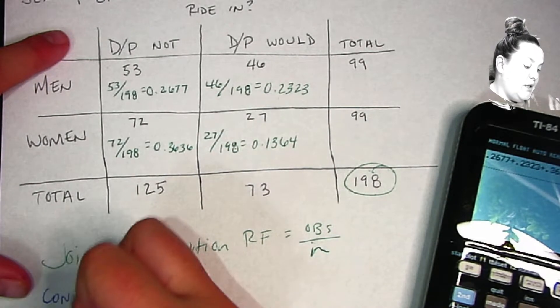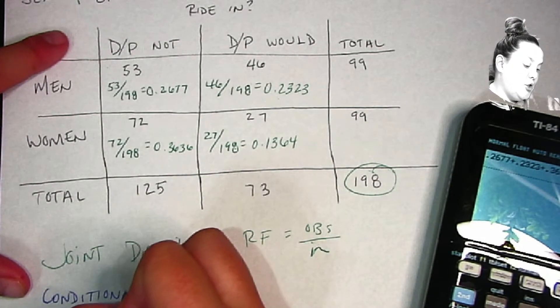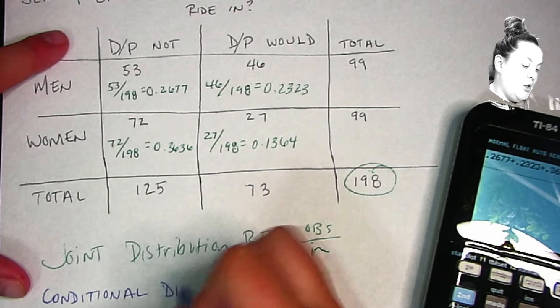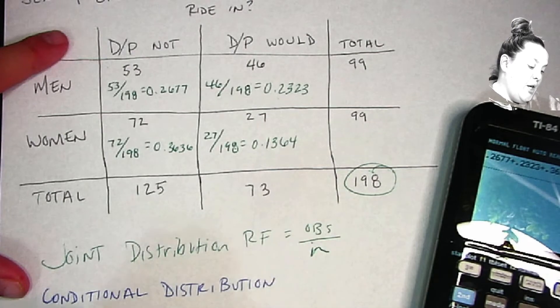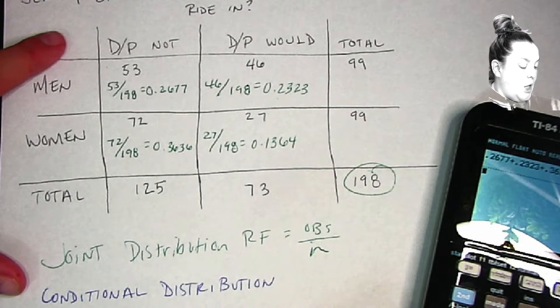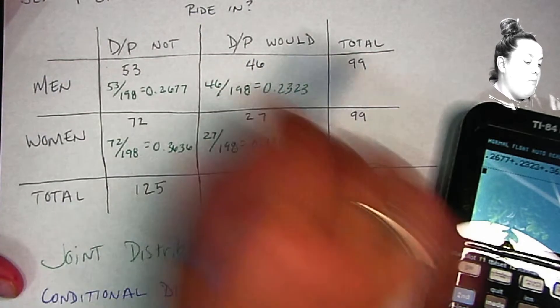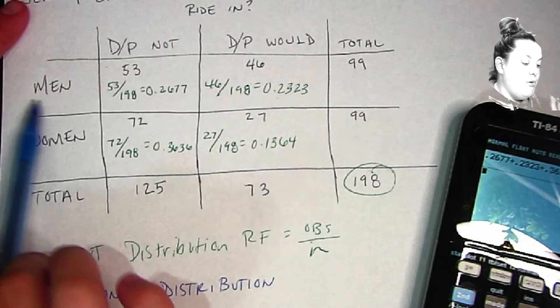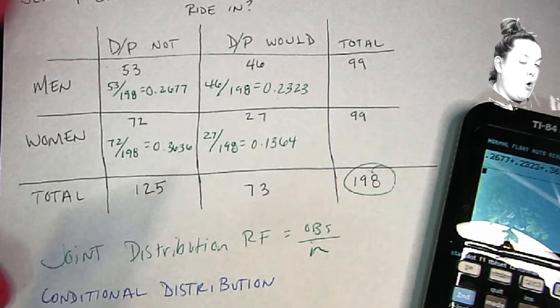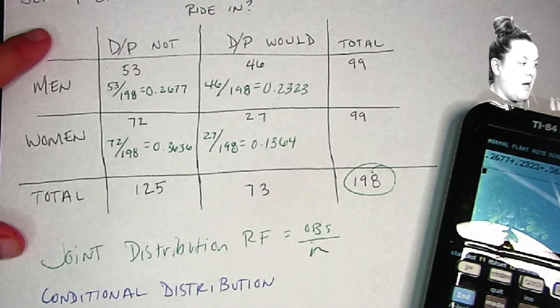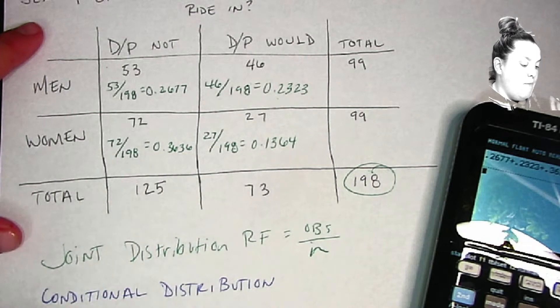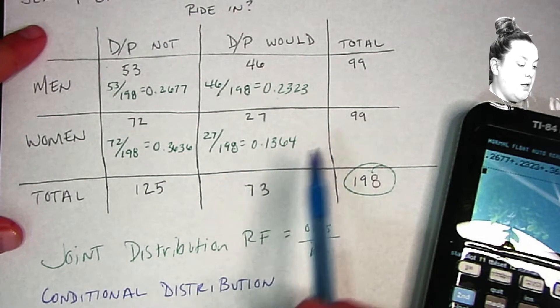Now the next thing we have is something called a conditional distribution, which means that we're putting a condition on the way that we calculate things. Usually with this type of data, the condition that you put on is what's represented in the rows, or the explanatory variable. So here my condition is going to be men and women.